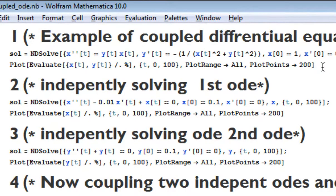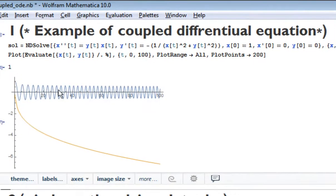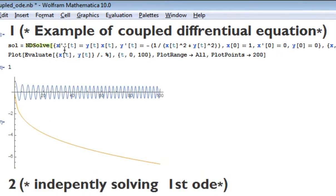Let me quickly demonstrate by simply running it. To run any code in Mathematica, simply press Shift and Enter. You can see here, these are the results of x and y. This blue color is for x and this gold yellow color is the solution of y.